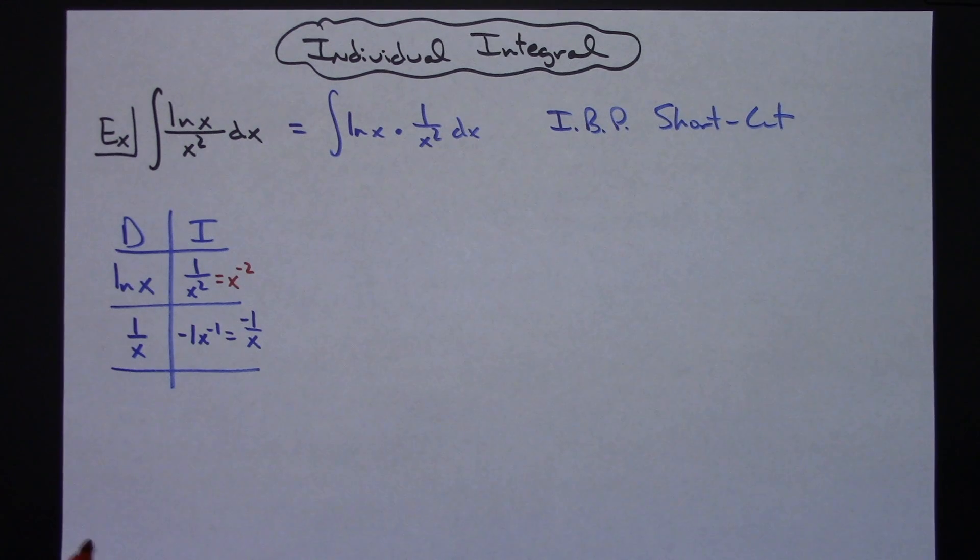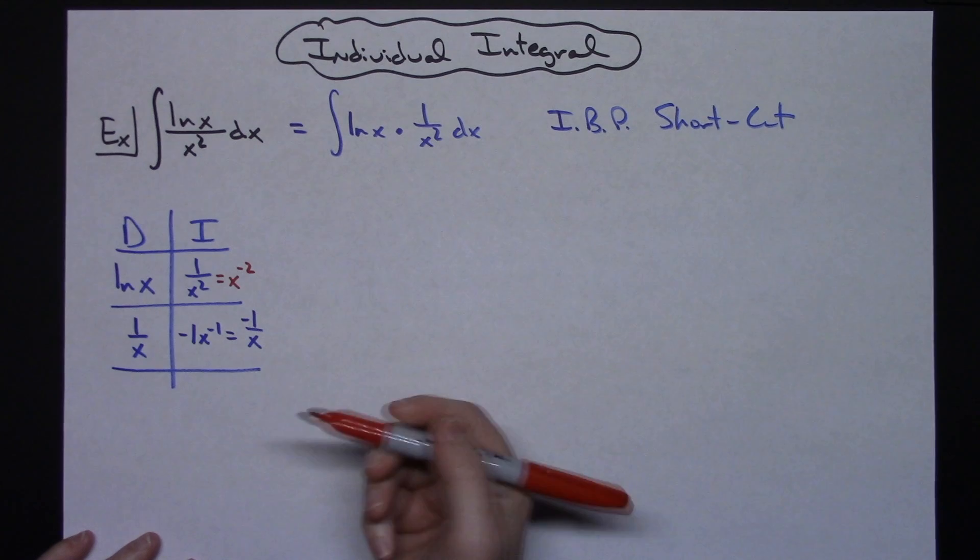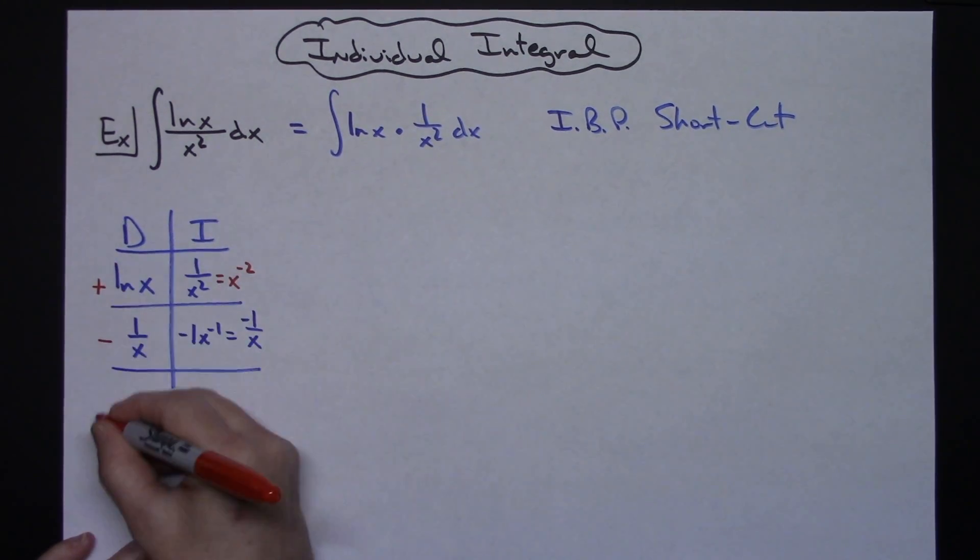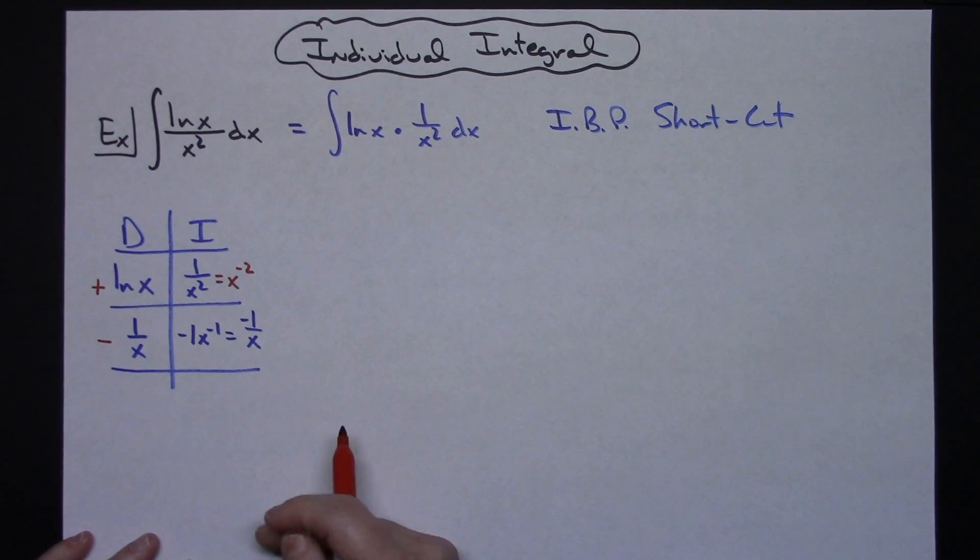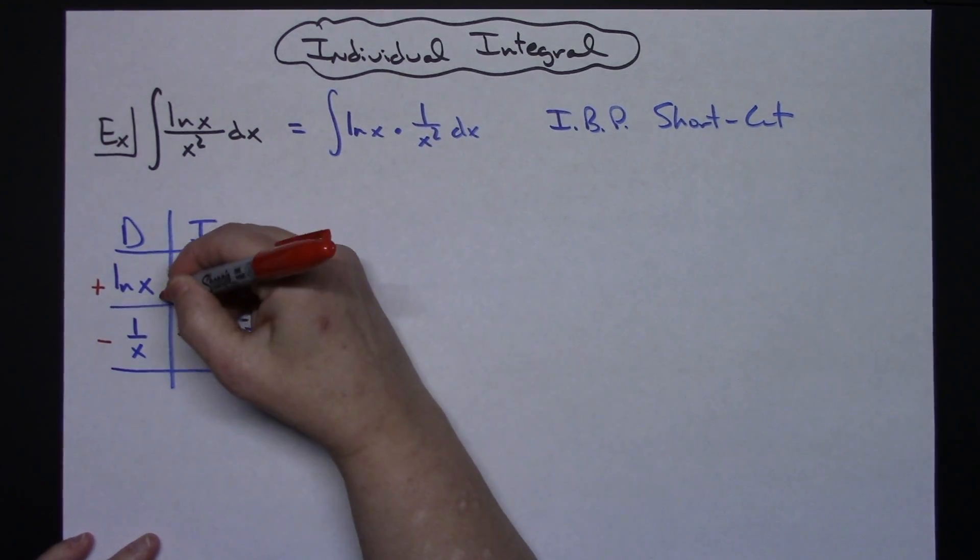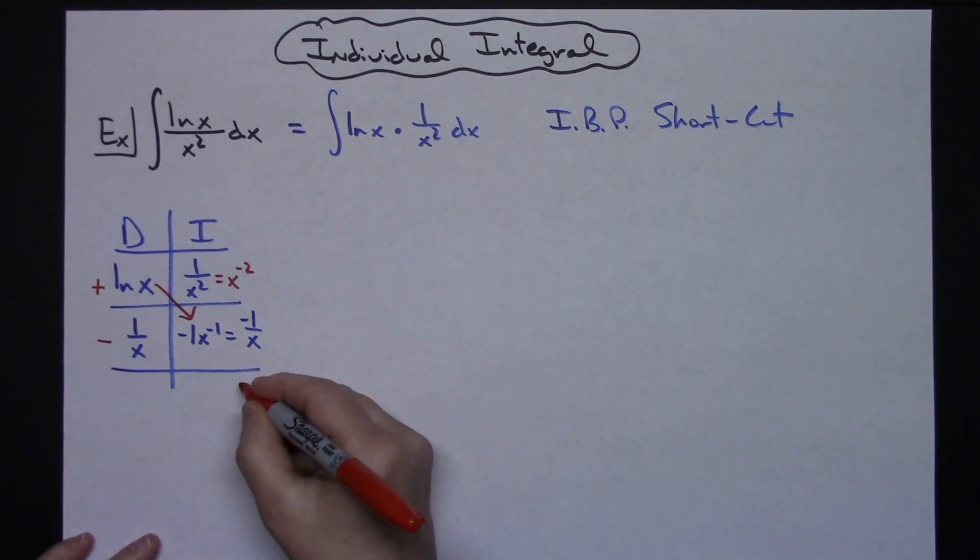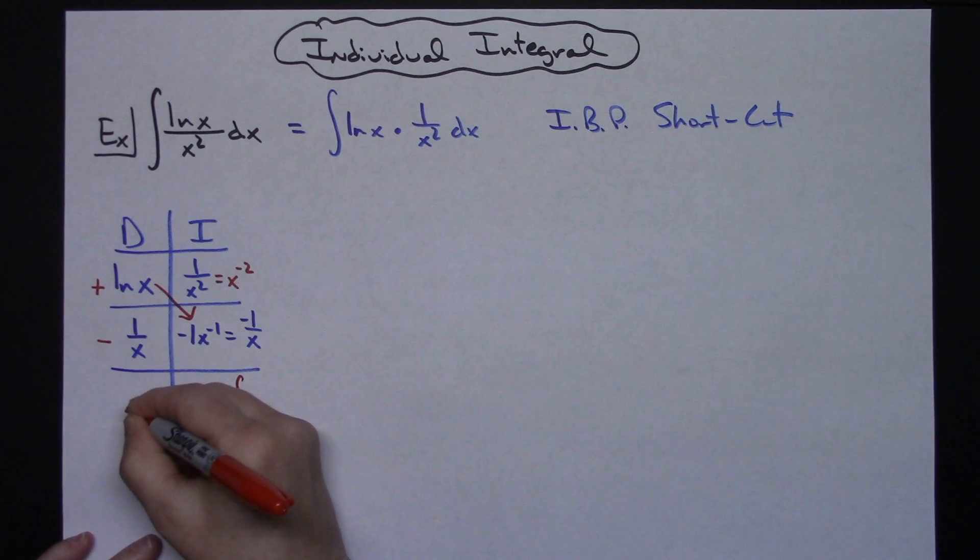So at this point then I probably am going to stop, especially when I take a look at what I've got here. On the shortcut we need a plus and then a minus and then a plus and then a minus—you would alternate those signs going down that way. You would multiply on the angle, and because I have something left over here I would integrate going back the other direction.